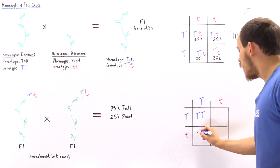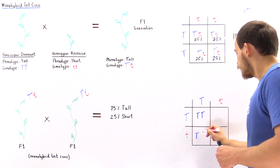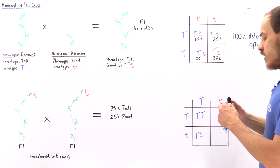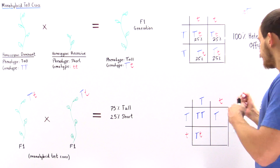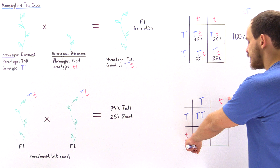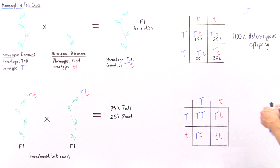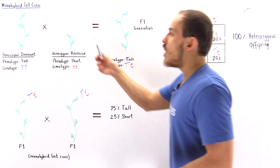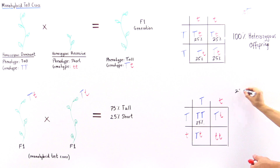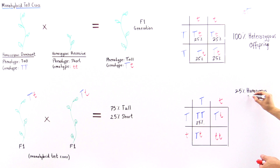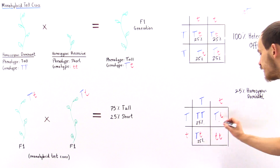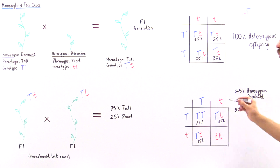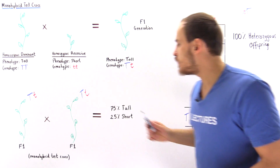When uppercase T crosses with lowercase t, we produce uppercase T, lowercase t. And when lowercase t crosses with lowercase t, we produce lowercase t, lowercase t. So 25% of individuals will be homozygous dominant, 50% will be heterozygous — just like the F1 plants — because we have two squares each at 25% giving us 50% heterozygous.